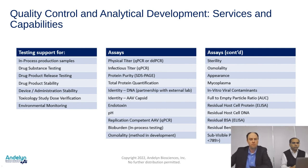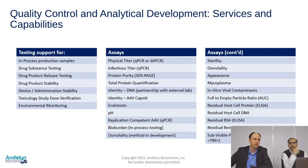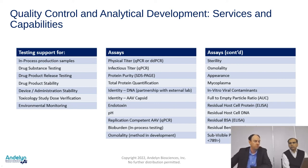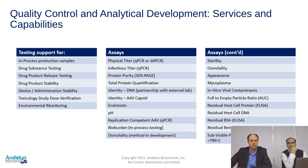The assays performed range from quantifying the titer that will be delivered, all the way through evaluating host cell and process-related impurities. Several high-profile studies have highlighted the biological relevance of post-translational modifications for transduction efficiency, tropism, and stability. Specialized assays are now becoming critical that measure changes in post-translational modifications including glycosylations and phosphorylation — these are very important for the delivery of gene therapies and biologics in general.